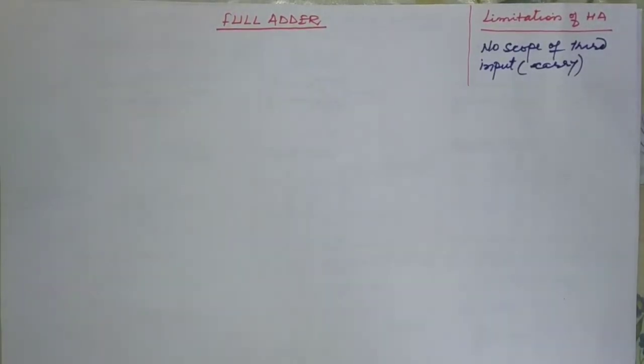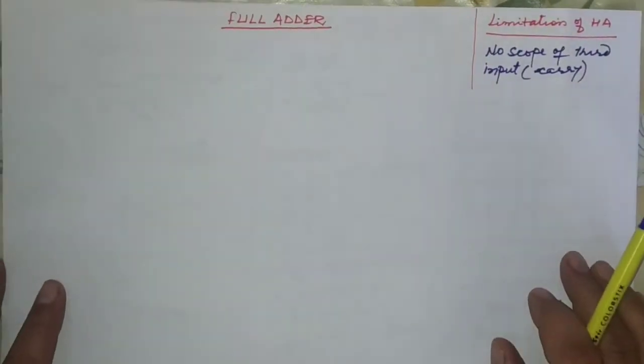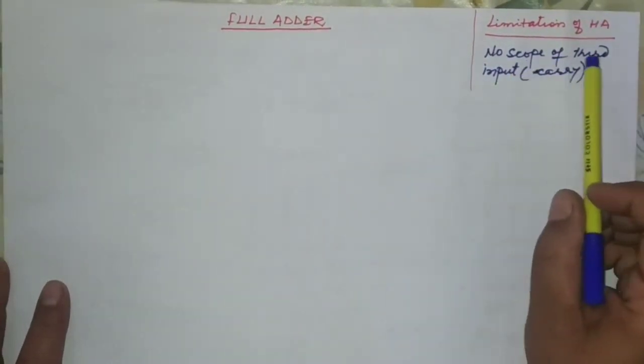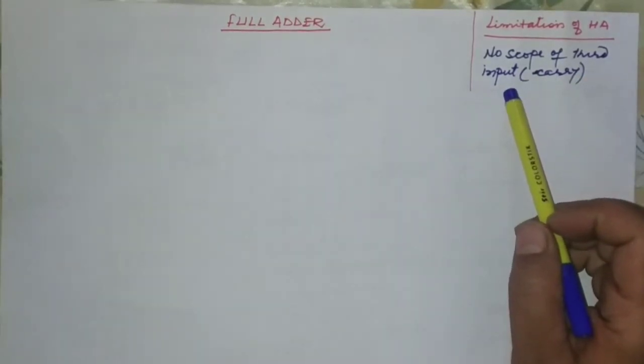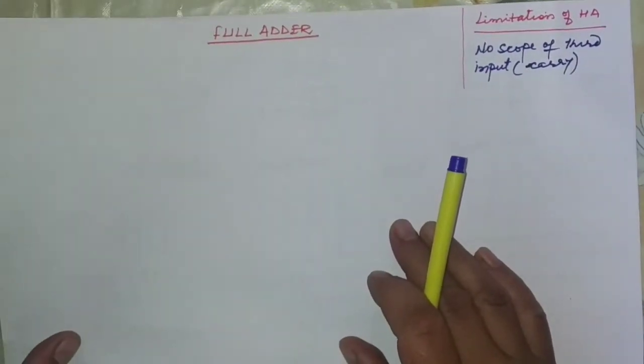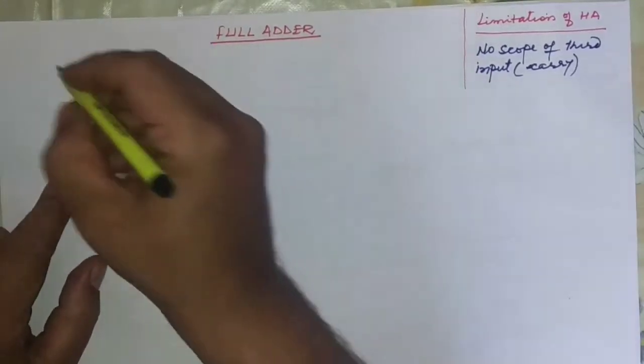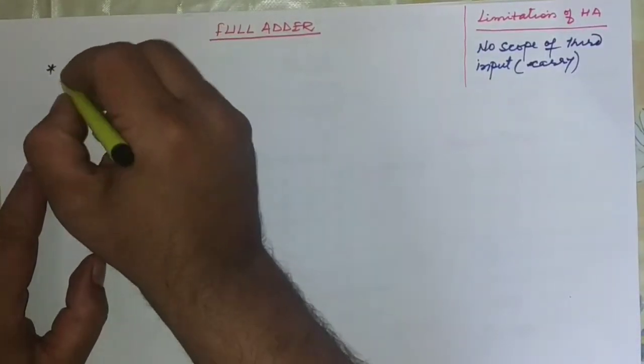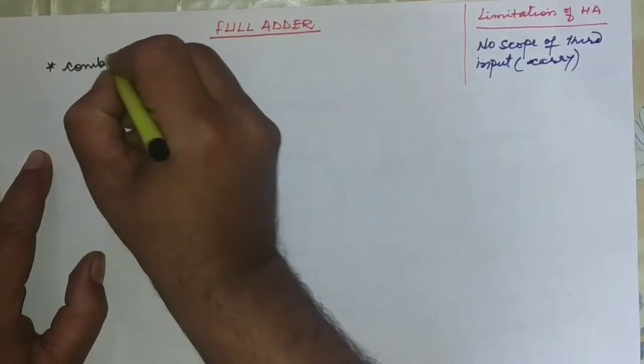In today's lecture we will discuss another combinational circuit which is the full adder. In the last lecture we discussed about one very important arithmetic circuit known as the half adder. We know that the limitation of the half adder was that there was no scope for a third input — if there is any carry, that carry cannot be forwarded to the successive bits. That limitation is removed in the full adder.